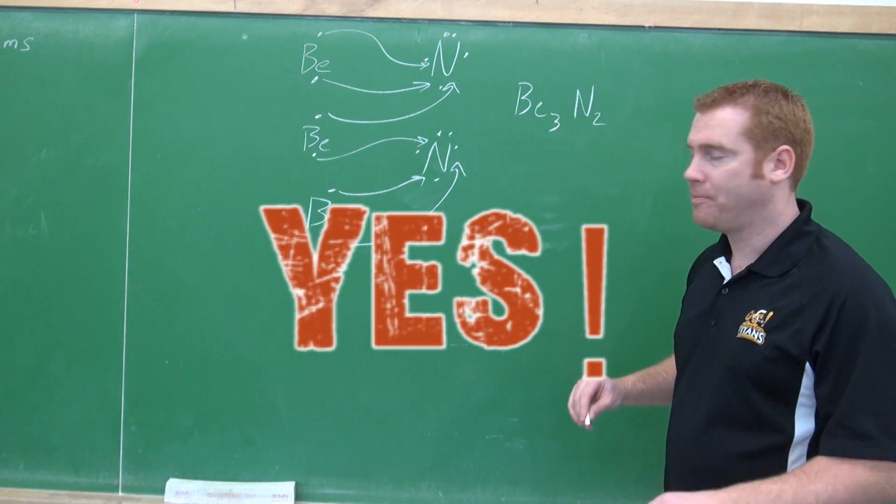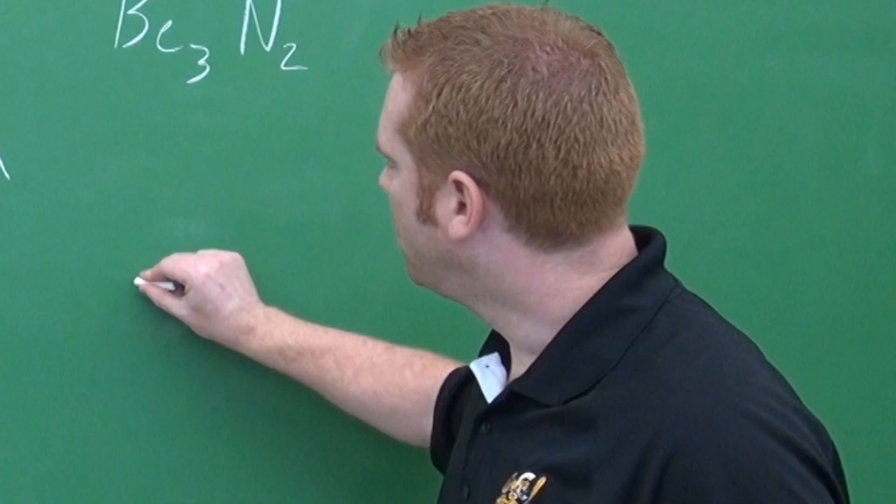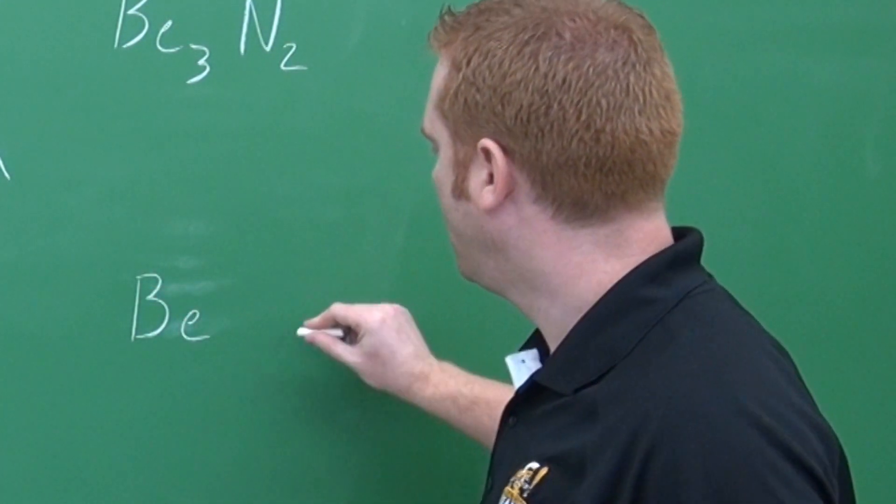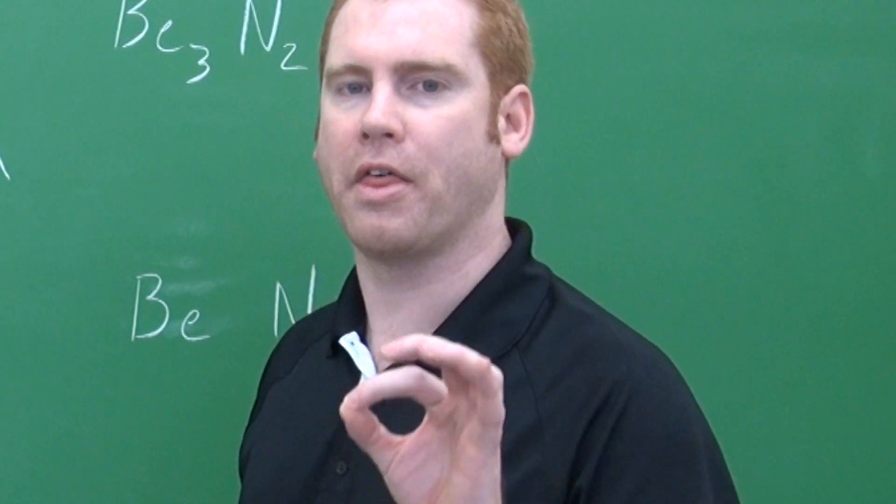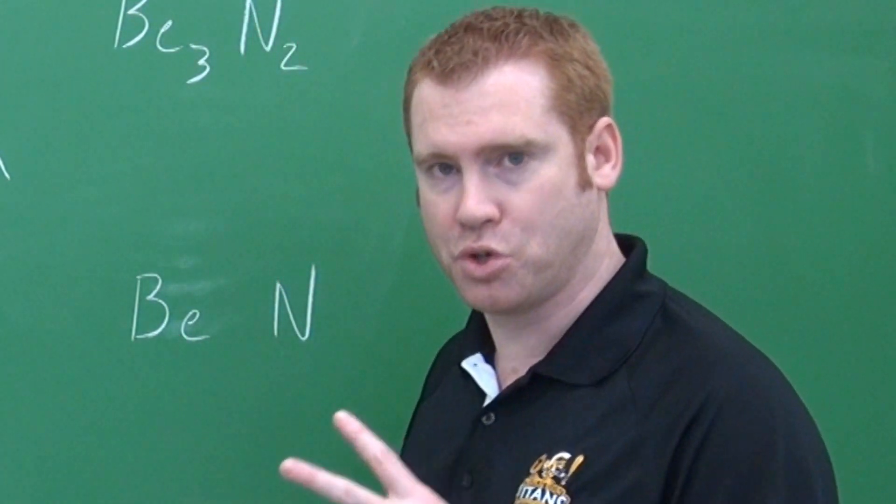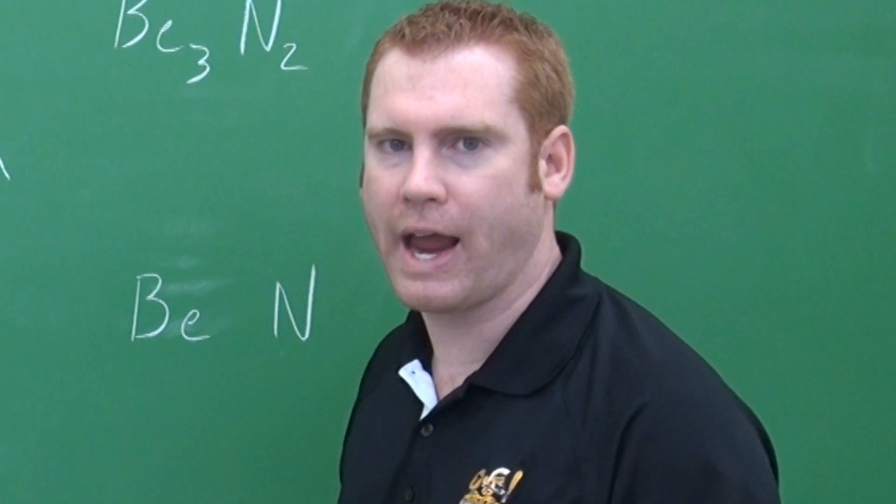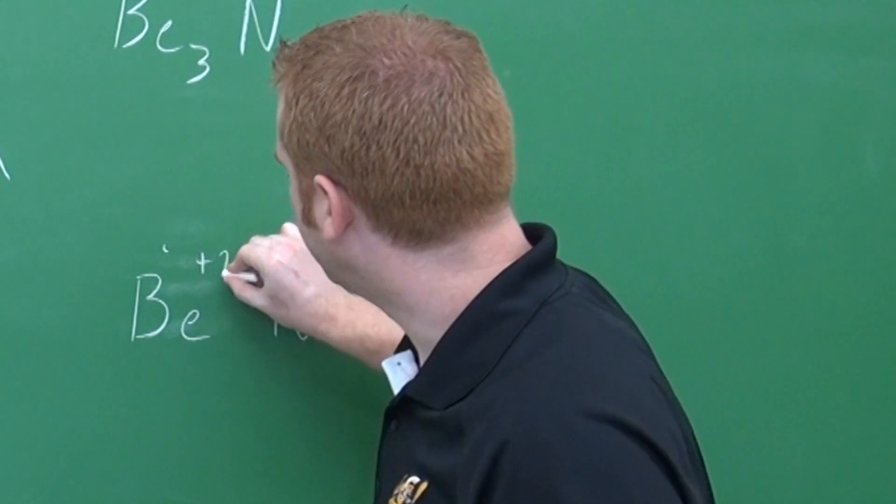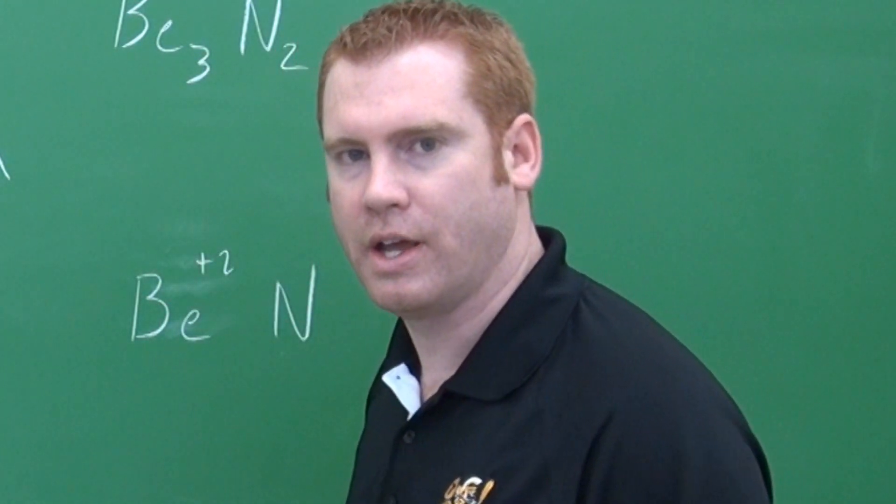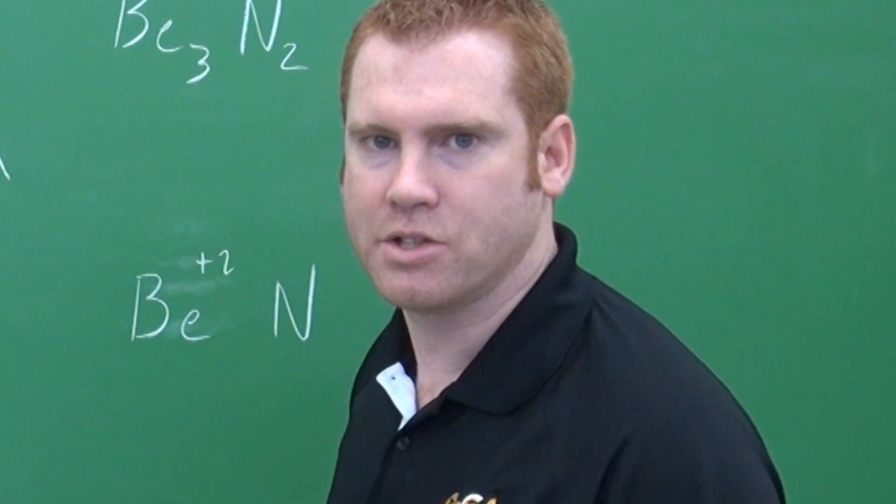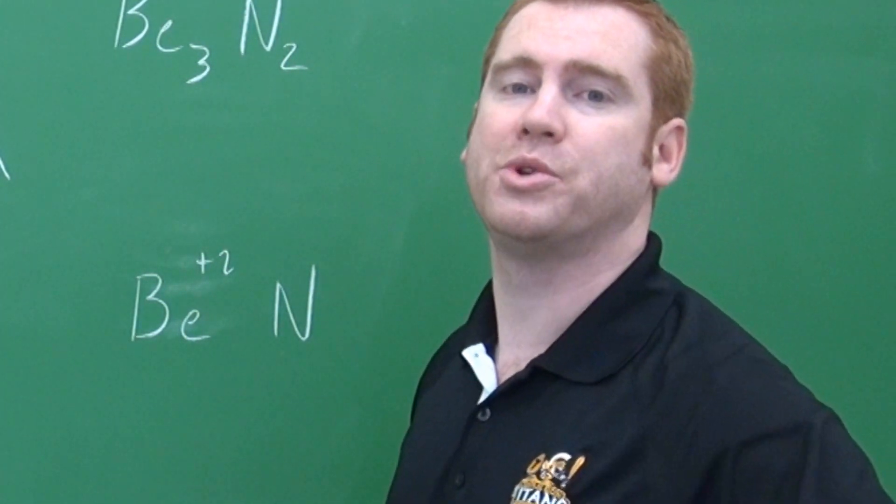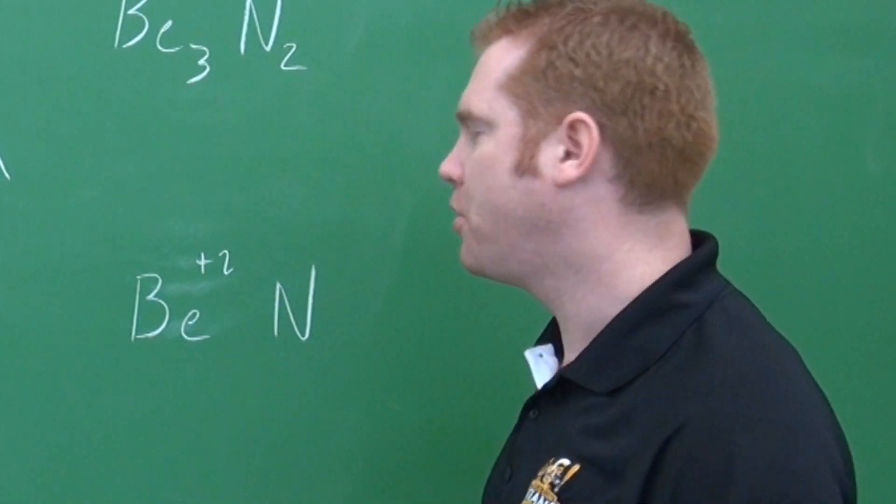Here's what we do. You want to write down the symbol for each element. Then you're going to look and determine what the charge is going to be. So in order to do that, you need to look at the number of valence electrons. Now you don't want the number of valence electrons, you want the charge. So beryllium has two valence electrons. I know that because it's in group IIA. So I'm going to write plus two. Nitrogen, it is in group VA, so it has five valence electrons. Therefore, it wants to gain three. So I'm not going to write down the five. I'm going to write down the three. So it's going to be minus three.